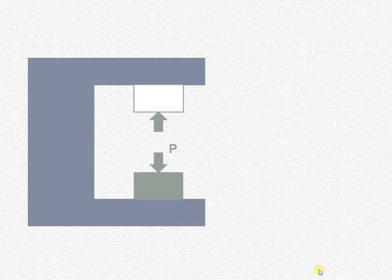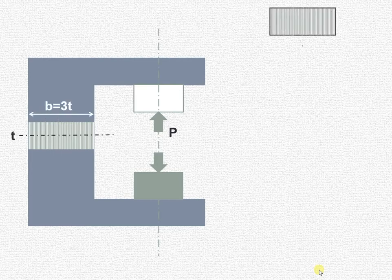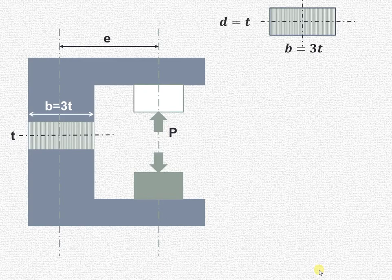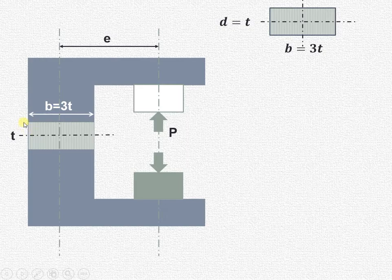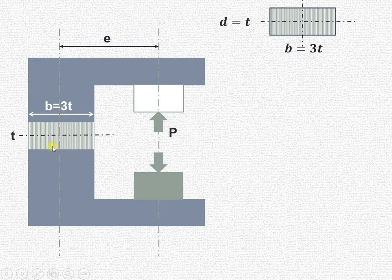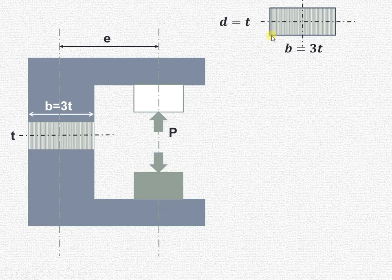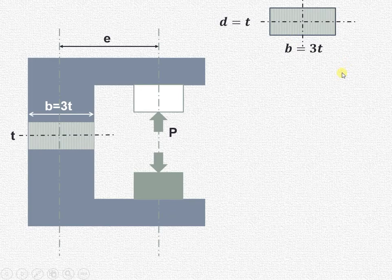We will design a C-clamp. The cross section at a certain section is shown, where p is the load. The cross section has width b and depth t, and it is assumed that b equals three times t. From the axis of the cross section up to the point of application of the load, the distance is the eccentricity e. This is an eccentric load since it does not act along the axis of the member. In our strength of materials formulas, the horizontal dimension is width b equal to 3t, and the vertical dimension is d equal to t.